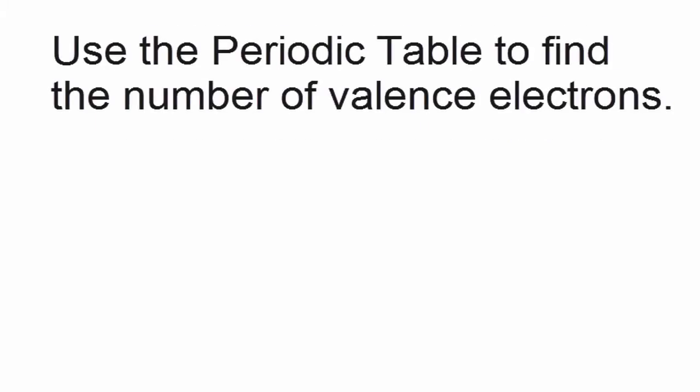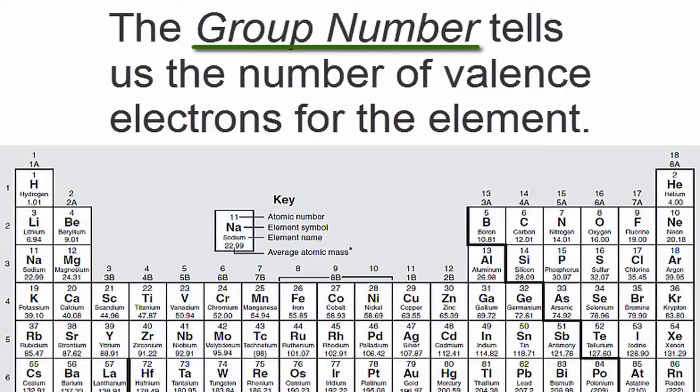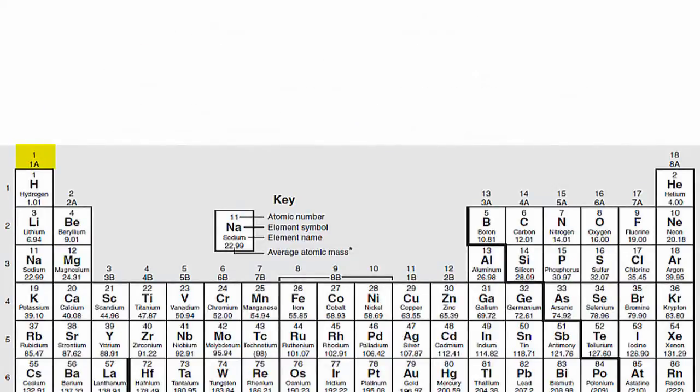We can find the number of valence electrons using the periodic table. The group number tells us the number of valence electrons for the element. For example, hydrogen has one valence electron because it's in group 1, sometimes called 1A.